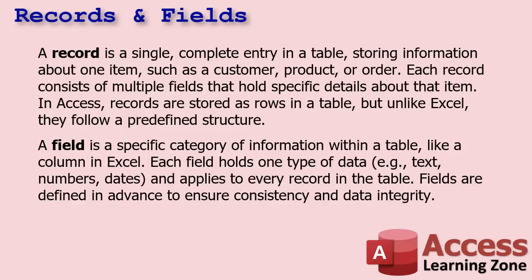To get textbook for a minute: a record is a single complete entry in a table storing information about one item - one entity such as a customer, a product, or an order. Each record consists of one or more fields that hold specific details about that item. In Access, records are stored as rows in a table, but unlike Excel, they follow a predefined structure. A field is a specific category of information within a table, like a column in Excel. Each field holds one type of data - text, number, yes/no, date - and it applies to every record in the table. Fields are defined in advance to ensure consistency and data integrity. You don't want a date showing up in your last name field, for example.